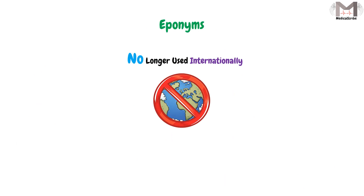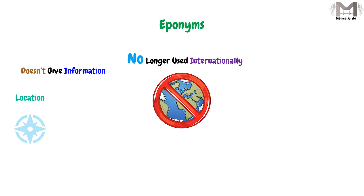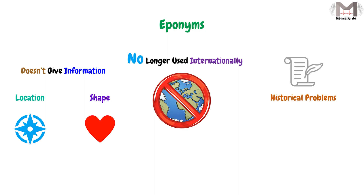Eponyms are no longer used internationally because they don't give us any indication about the structure's location, shape, or other information about the structure. There are also historical problems associated with them. However, we have to know that if we see after a structure's name a term in quotation marks, this is an eponym.